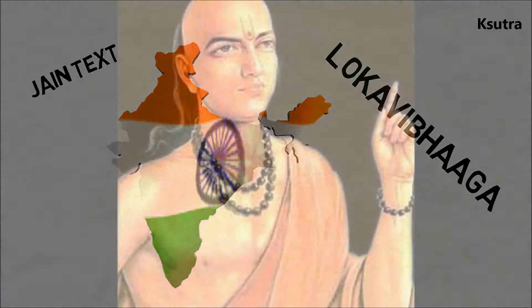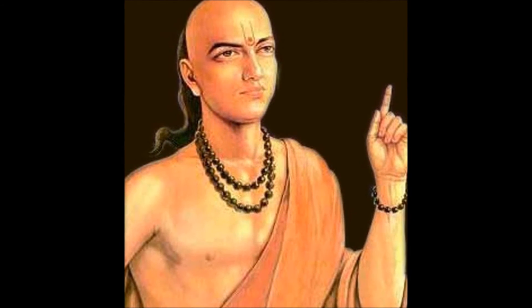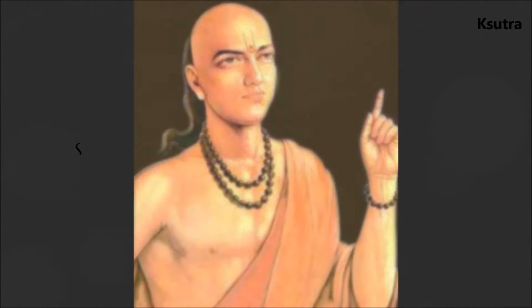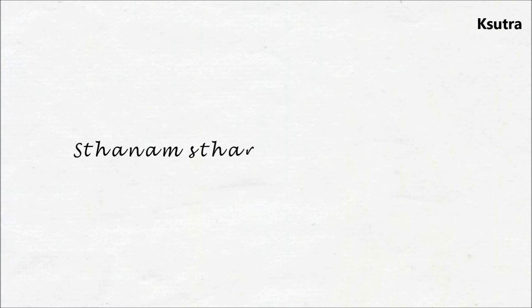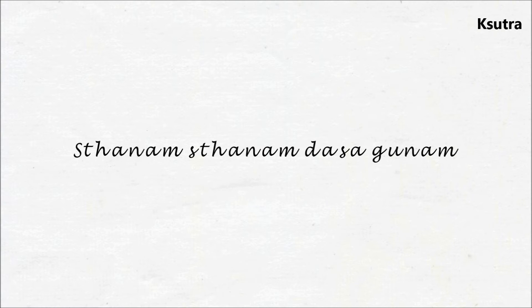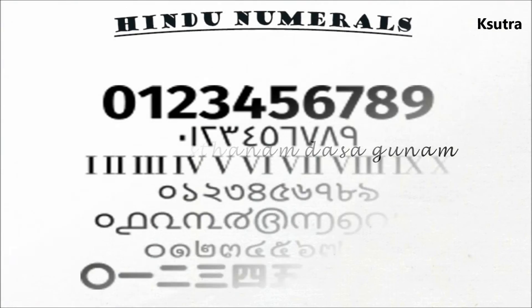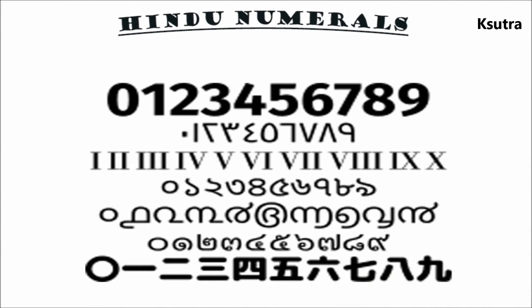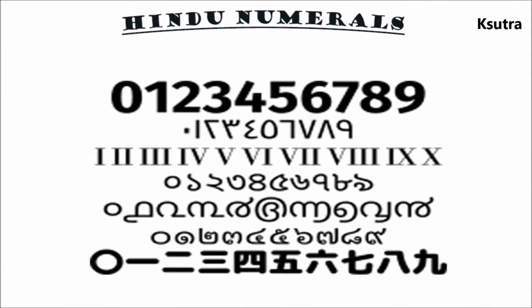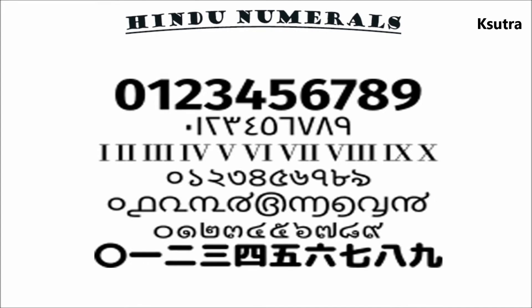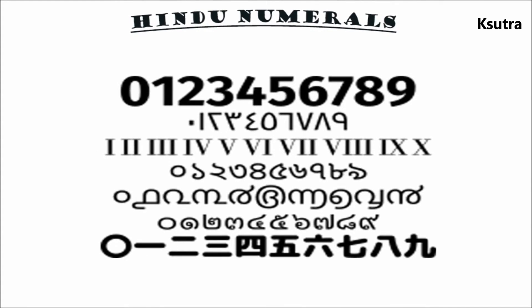In 498 AD, Indian mathematician and astronomer Aryabhata stated 'sthanam sthanam dasa gunam,' or 'place to place in ten times in value,' which may be the origin of the modern decimal-based place value notation. Hindu culture had a positional number system in base ten, and they used a dot to represent an empty place.